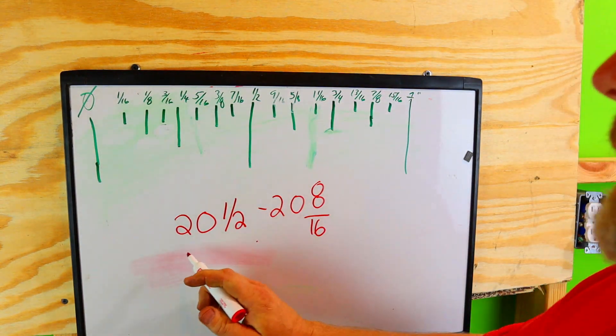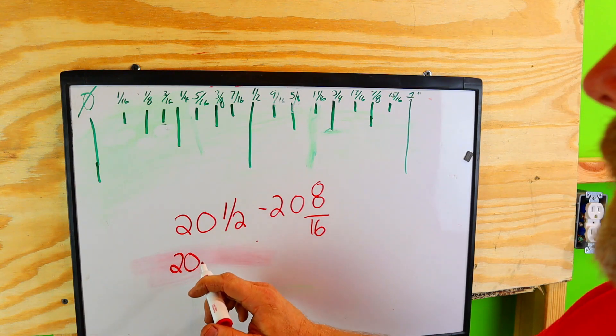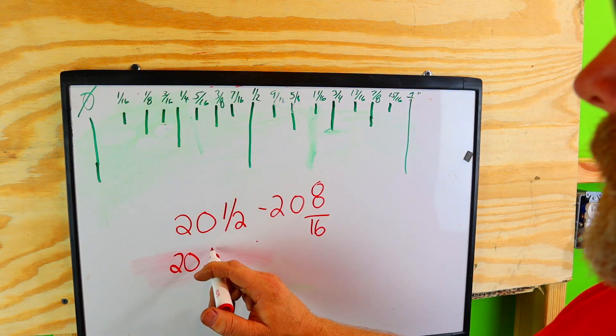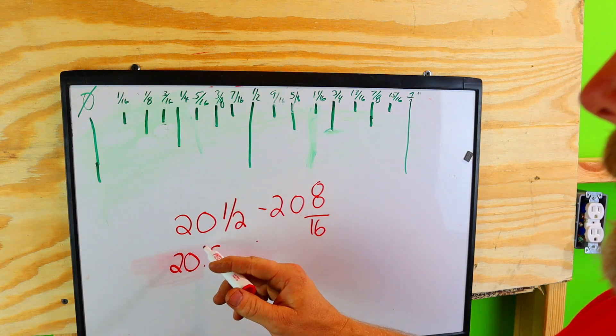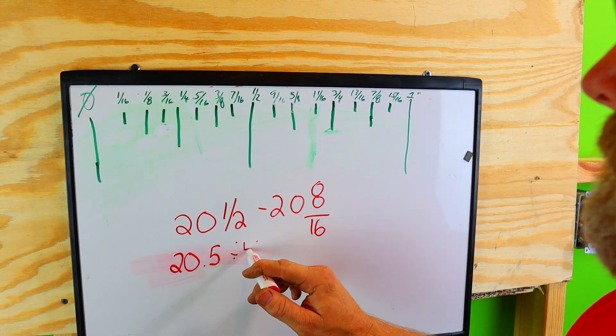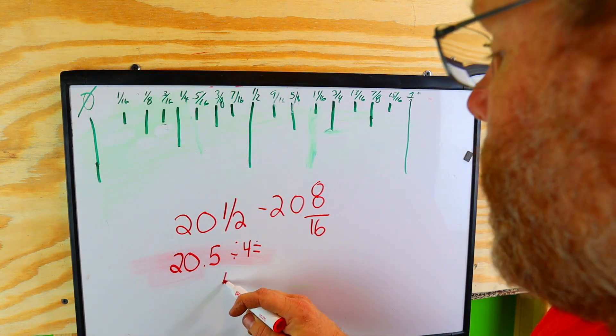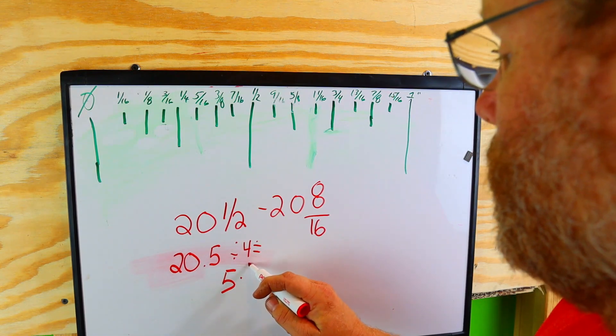Well, let's see. All right, so let's say you want to take 20.5, right, because half of one is a half, 0.5, and you want to divide it by four, and it comes up to 5.125.